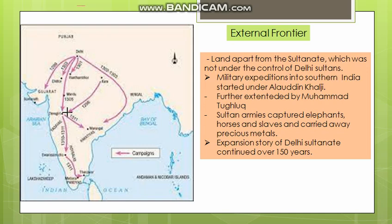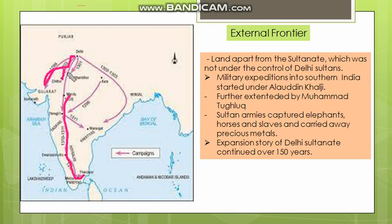If you want to send them to the external frontier, you can send them to the external frontier. The US garrison town is never enough. What do you do? Military expeditions. If you want to send them like Alauddin Khalji, these are military expeditions. Go to Malwa, Deccan, and Gujarat. This is the world king of the Sultanate, and you can divide and expand the world.